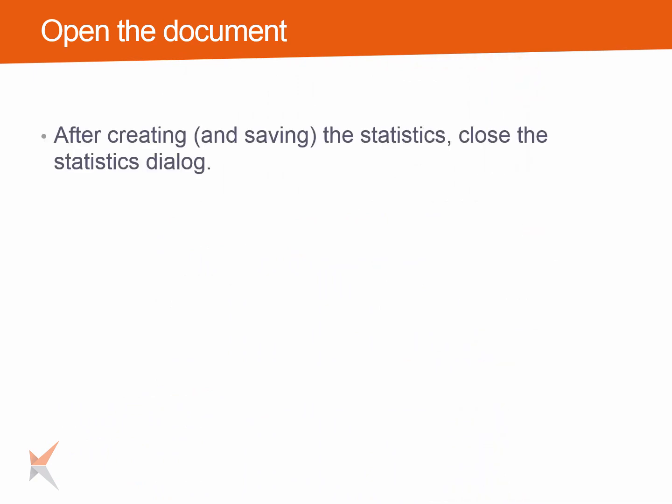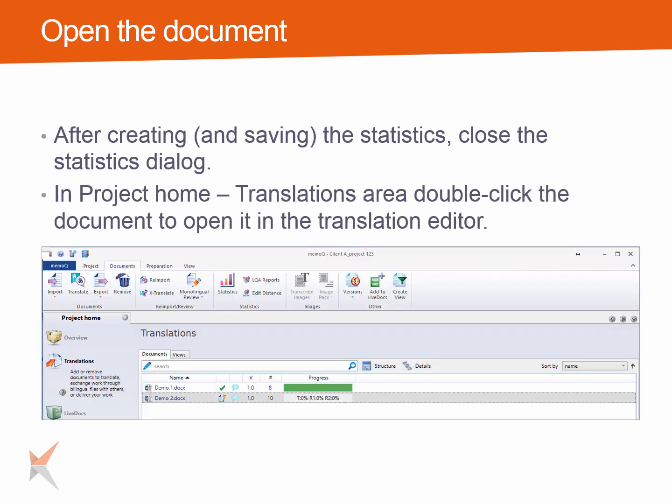After creating and saving the statistics, close the statistics dialog. In Project Home, translations area, double-click the document to open it in the translation editor.